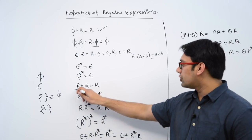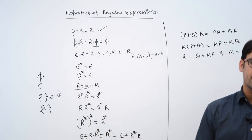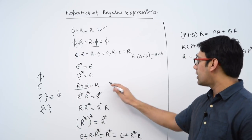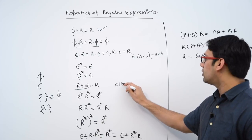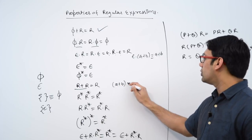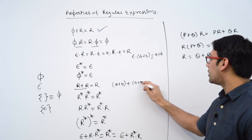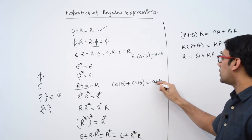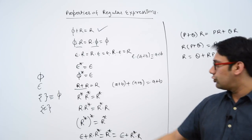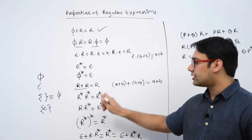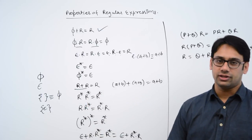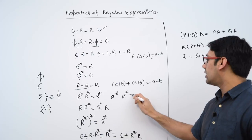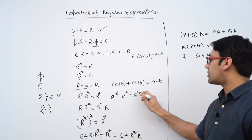If you do a union of the same regular expression, then you get the same regular expression. For example, (a plus b) union (a plus b) is equal to (a plus b) only. If you do r* dot r*, then it is equal to r* only.